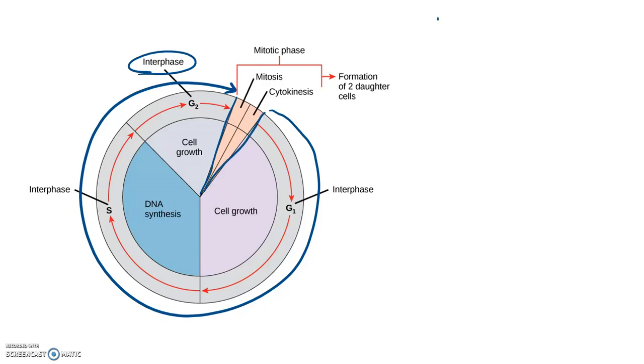So mitosis is cell division, and we can think of lots of reasons that a cell might need to divide. As an organism grows, as if damage occurs and we need repair, as cells become older we need to replace those. So there's several reasons for cell division, and let's start by going through the process of interphase.